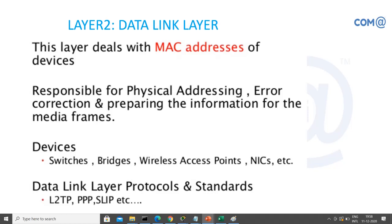The data link layer refers to MAC addresses. ARP (Address Resolution Protocol) plays a major role here, converting IP addresses to MAC addresses. In the case of a switch, which is a Layer 2 device, it maintains a switching table populated using MAC addresses. Using the MAC table, a switch can deliver data directly from source to destination without broadcasting, which speeds up communication.